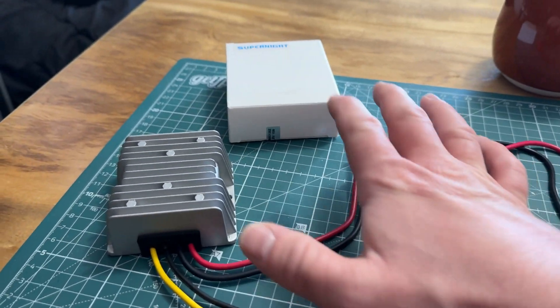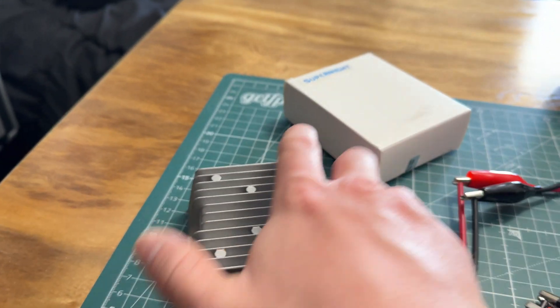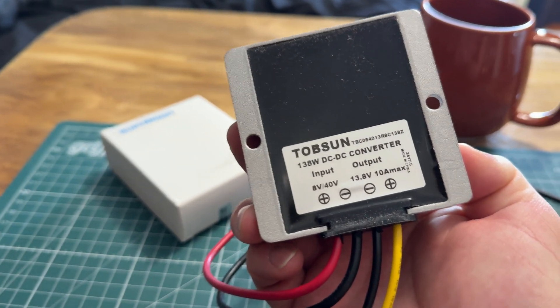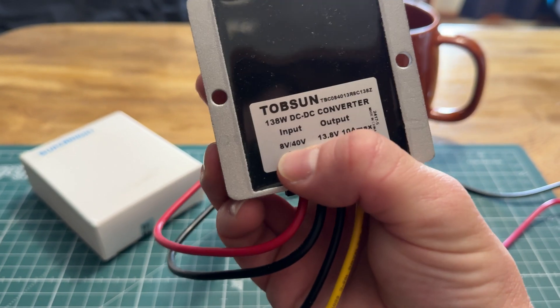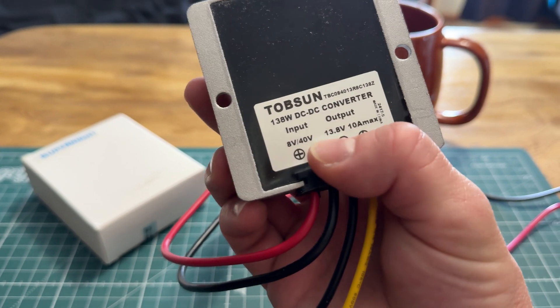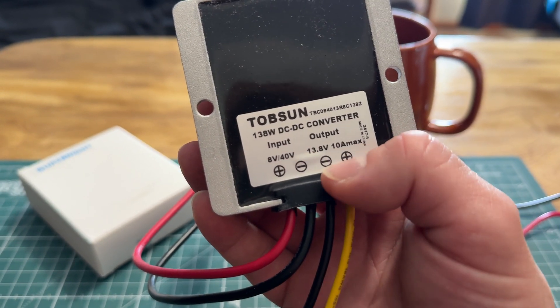Hey guys, in this video I'm just going to be checking out this Super Nights DC voltage converter. This one happens to be 138 watt DC to DC and the input can go all the way from 8 volts to 40 volts and it should have a 13.8 volt constant output.